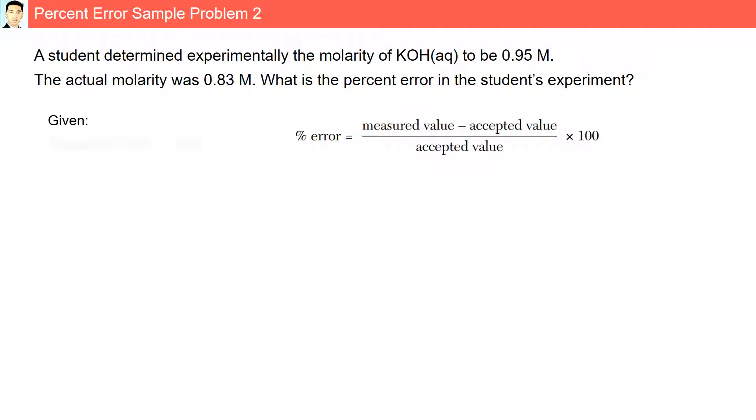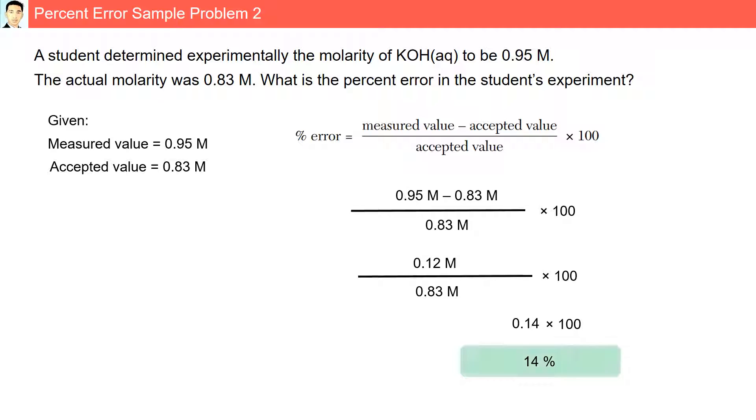The given: the measured value is 0.95 molar. The accepted: 0.83 molar. Substituting into our formula, we have the percent error, 14%.